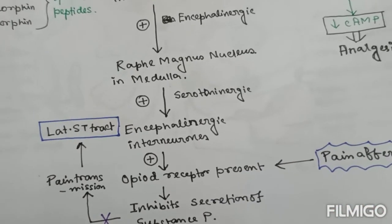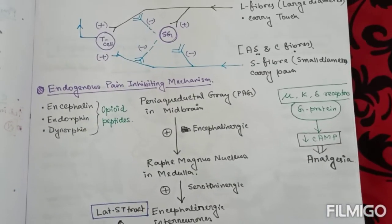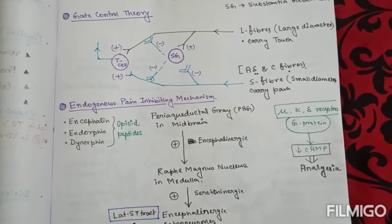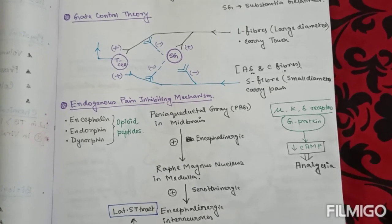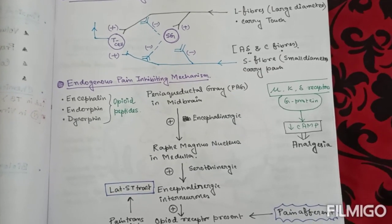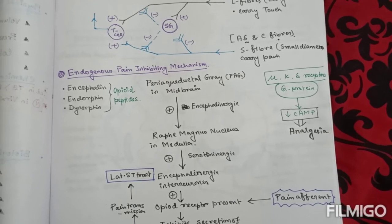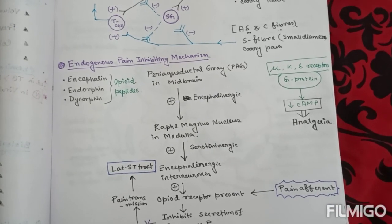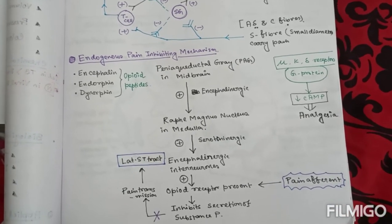So, this is all about pain inhibiting mechanisms of our body. First is the gate control theory, and the other is the endogenous pain inhibiting mechanisms by opioid peptides. Thank you guys for watching.